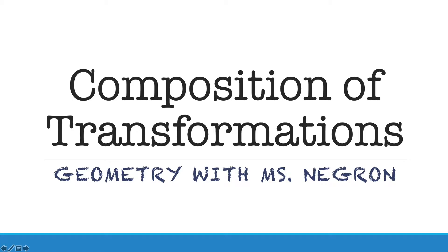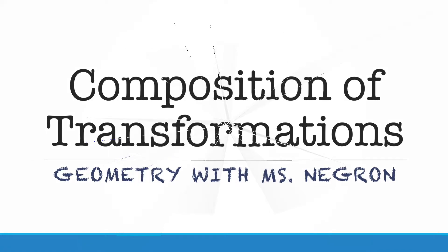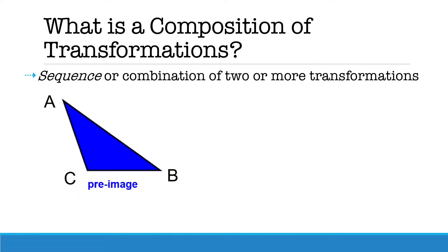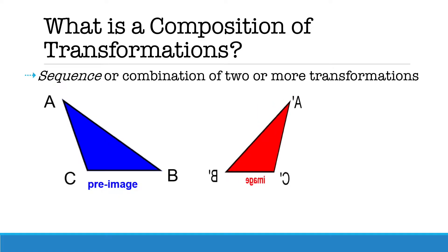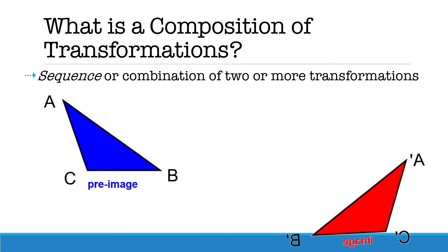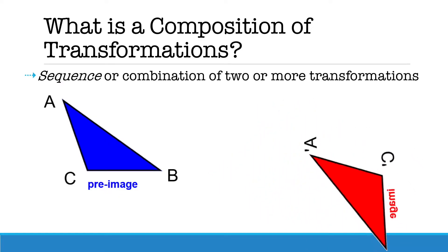Hi everyone, Ms. Negron here. Today we're going to be discussing composition of transformations. A composition is a sequence or combination of two or more transformations. For example, we can take triangle ABC and reflect it, translate it, and rotate it.